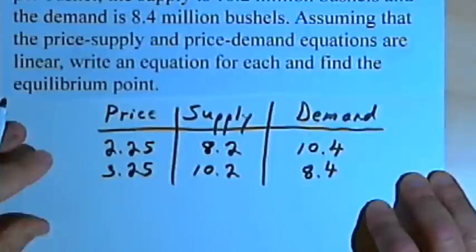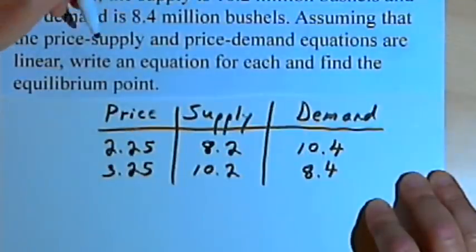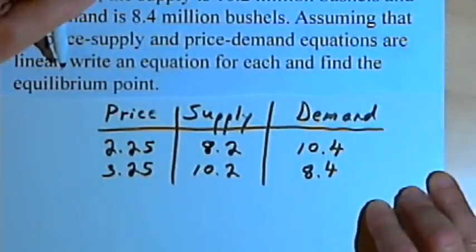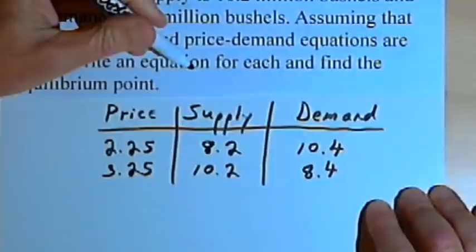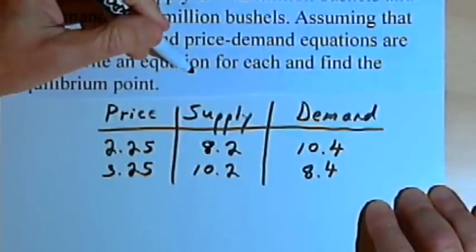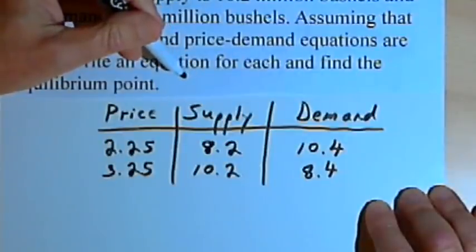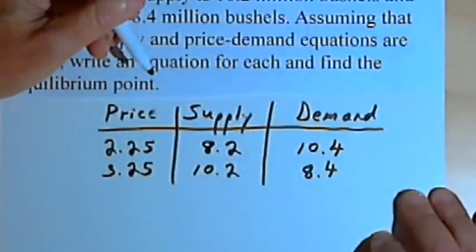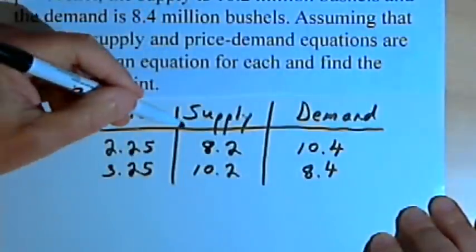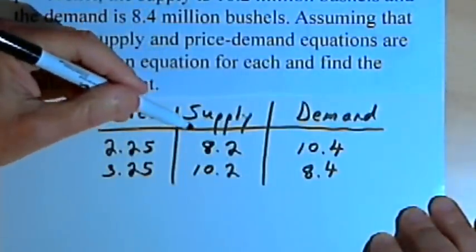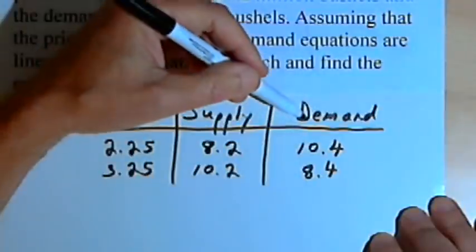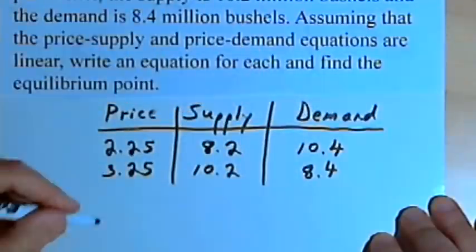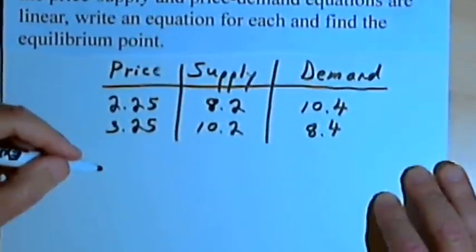The problem says, assuming the price supply and price demand equations are linear, write an equation for each and find the equilibrium point. So we're basically writing two linear equations: the first one is the price supply equation, and the other one is the price demand equation. We'll start with price supply.